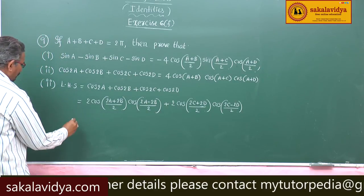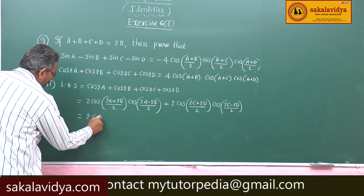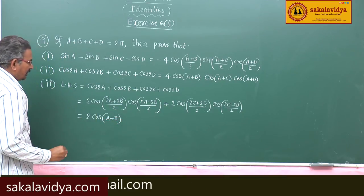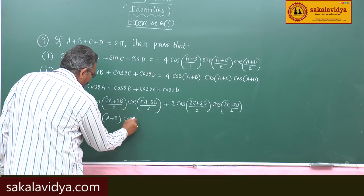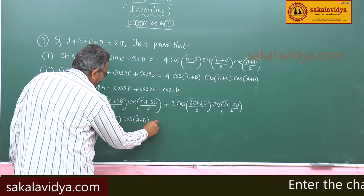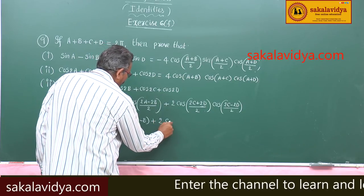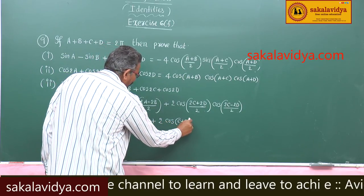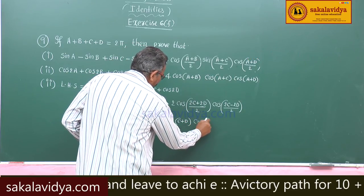So now this can be written as 2cos(A+B)·cos(A−B) plus 2cos(C+D)·cos(C−D).